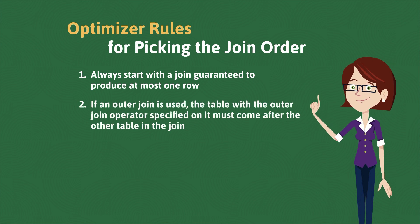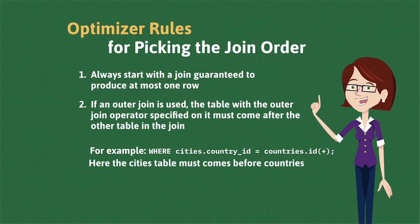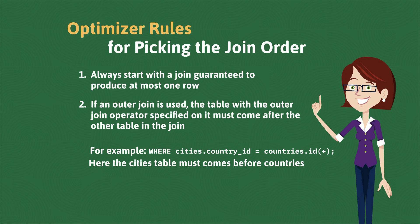If a SQL statement uses outer joins, then the optimizer must obey the join order specified by that outer join. For example, with the Oracle syntax for outer joins, that means the table with the outer join operator must come after the other table in the where clause predicate. In this example, that would mean the city table must come before the countries table.